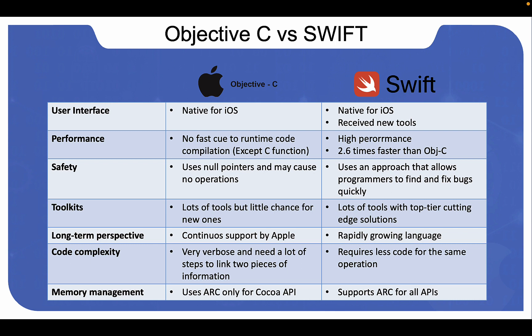From a code complexity perspective, Swift requires less code. Swift uses string interpolation, which eliminates the need to memorize tokens — developers can insert variables directly into strings such as buttons or labels. This avoids a common cause of crashes in Objective-C. More importantly, Swift is more concise, and since developers read code ten times more often than they write it, Swift is easier to read visually and faster to work with.